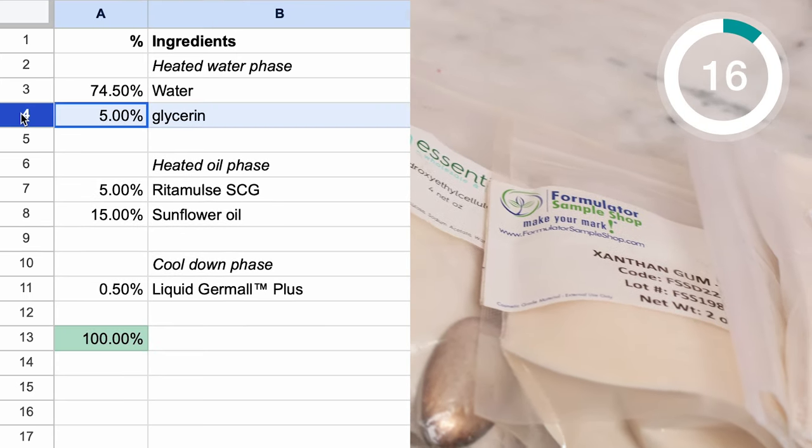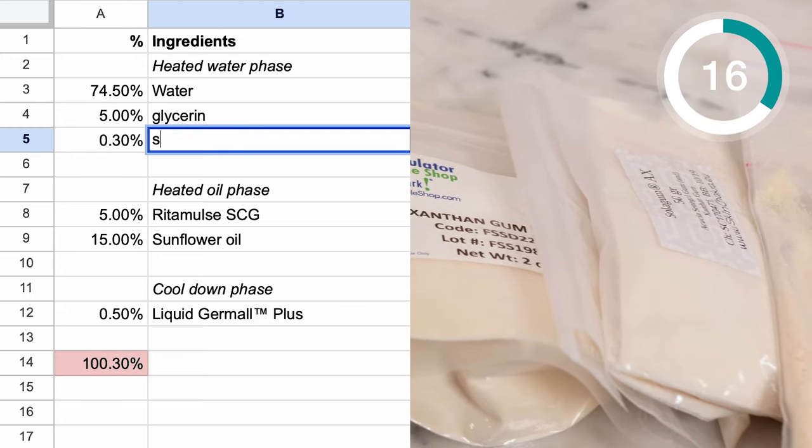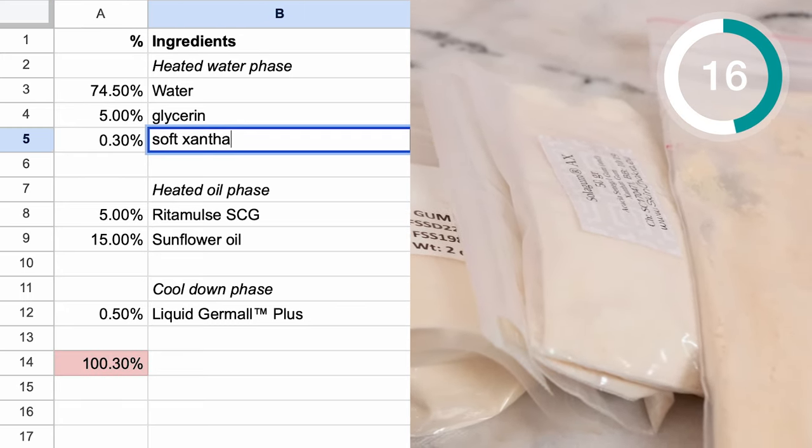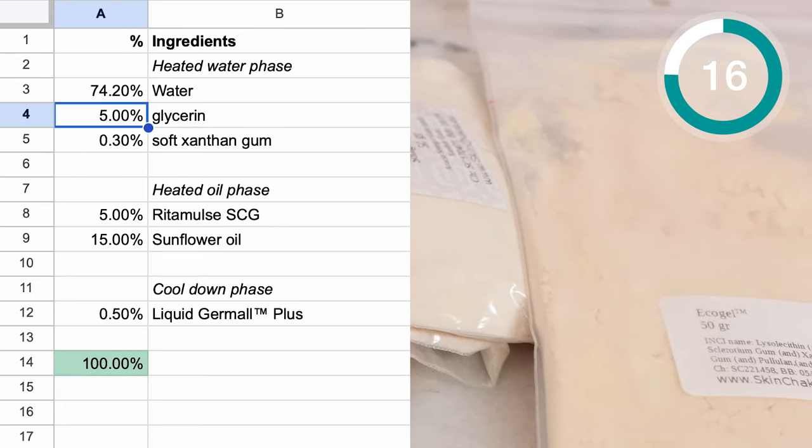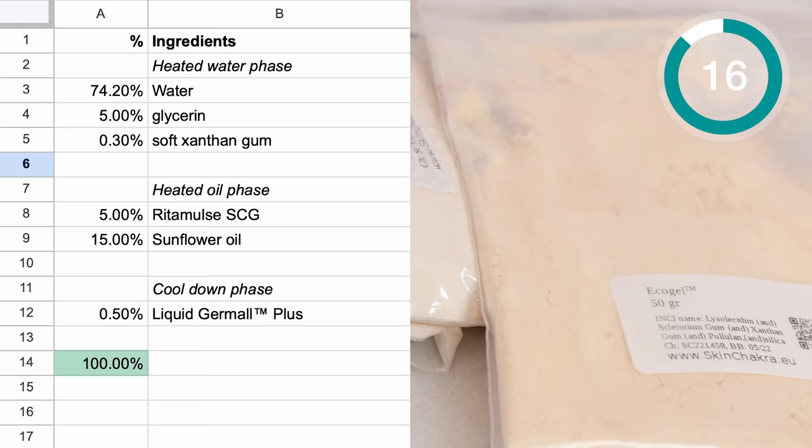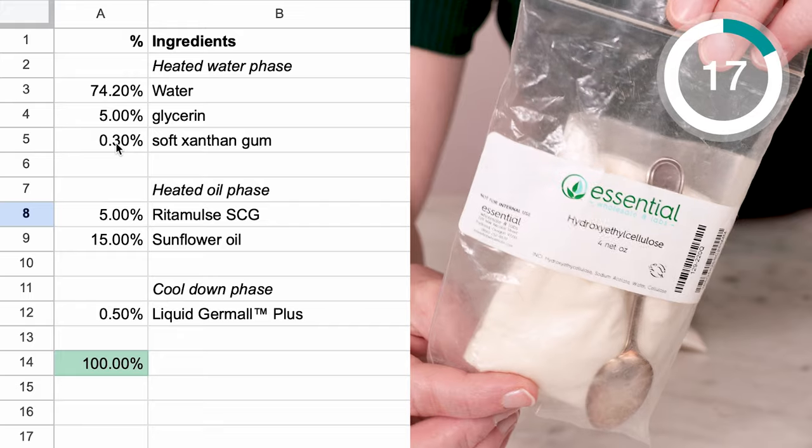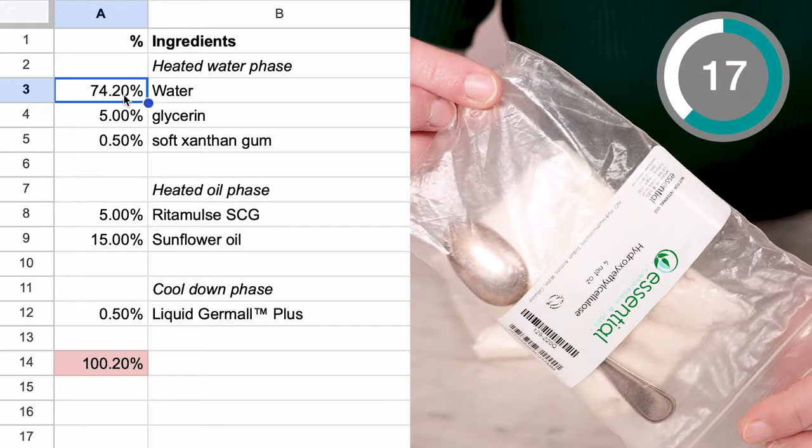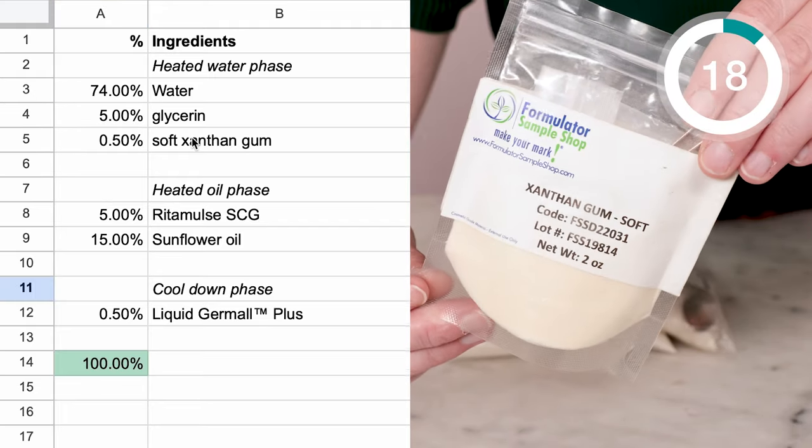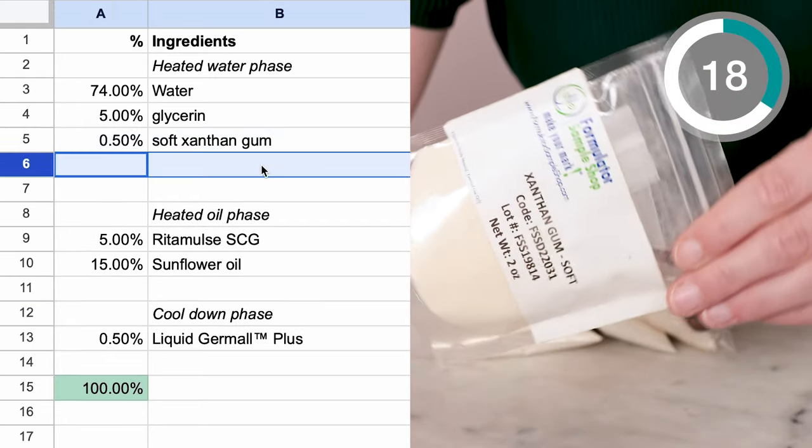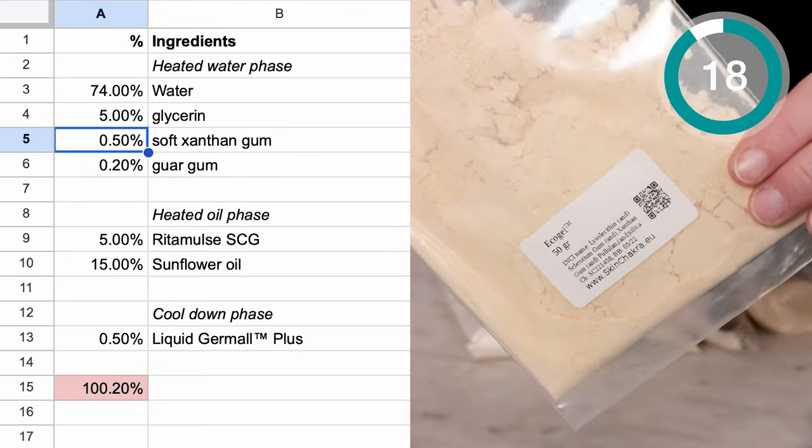For a different sort of viscosity boost, swap 0.1 to 0.5% of the water in your emulsion for a gum or gelling ingredient. I am loving soft xanthan gum these days, but other options include regular xanthan gum, guar gum, and hydroxyethyl cellulose. If the formulation already has a gum or gelling ingredient, you can try using more or less of it to see what you think, or leave it out altogether. And you can also try blending different gums or gelling ingredients, or using a pre-blended jelly mix, like Solagum or Ecogel.